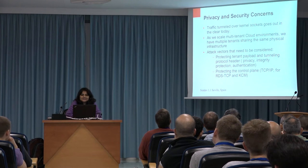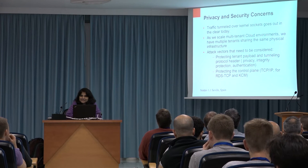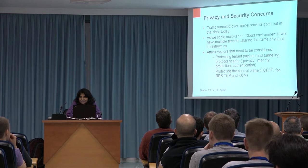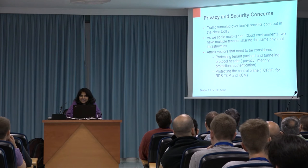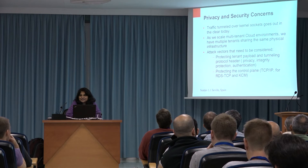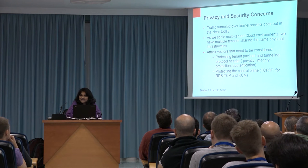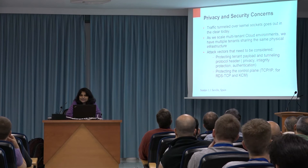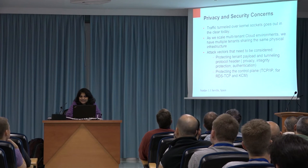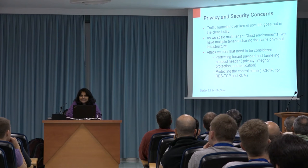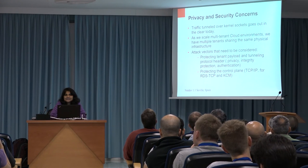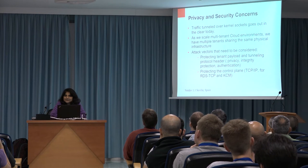The privacy and security concern is that traffic going out over these kernel sockets — which can traverse long internet paths — is going out in the clear today. As we go to multi-tenant and cloud environments, there are three things you need to secure. First, because you can traverse long internet paths, intermediate nodes cannot be trusted, so you have to protect the tenant payload. Second, you have to protect your protocol header itself — your Geneve, VXLAN, or RDS header. Third, you have to protect the control plane, especially for RDS-TCP or KCM. TCP is vulnerable to reset attacks and sequence number attacks.